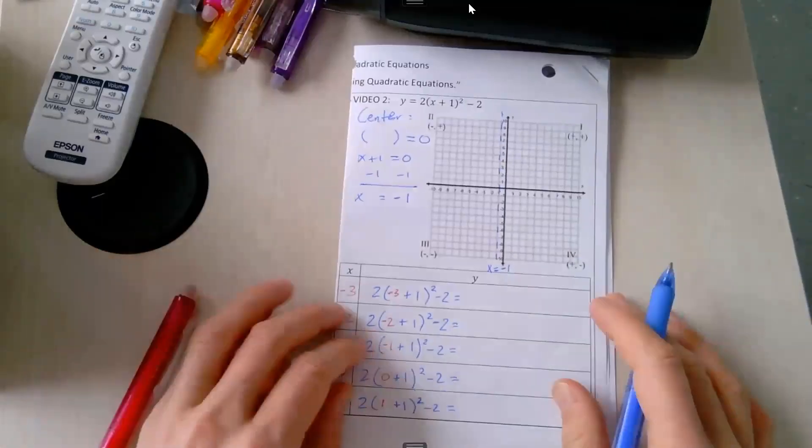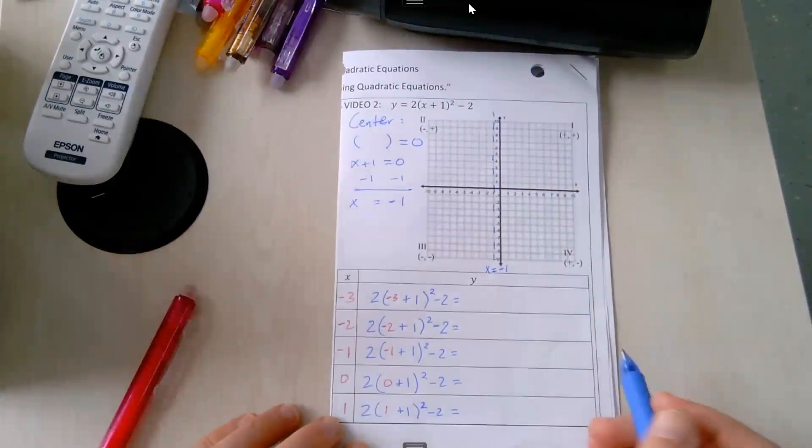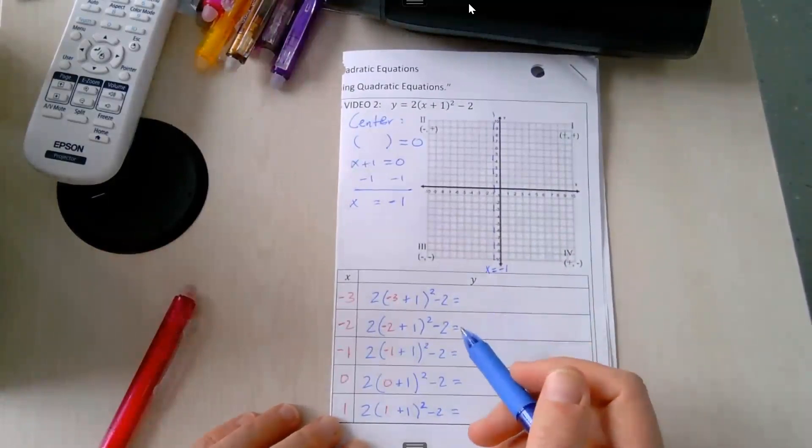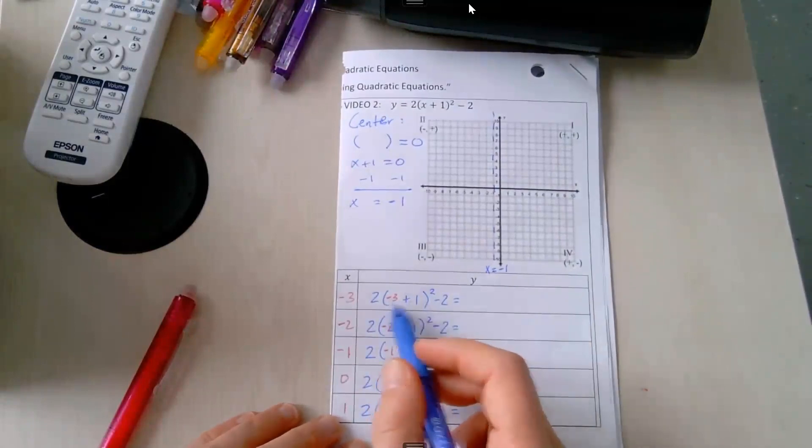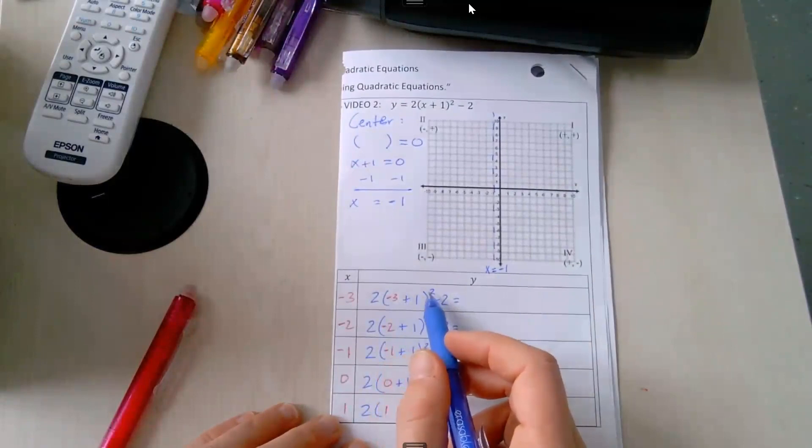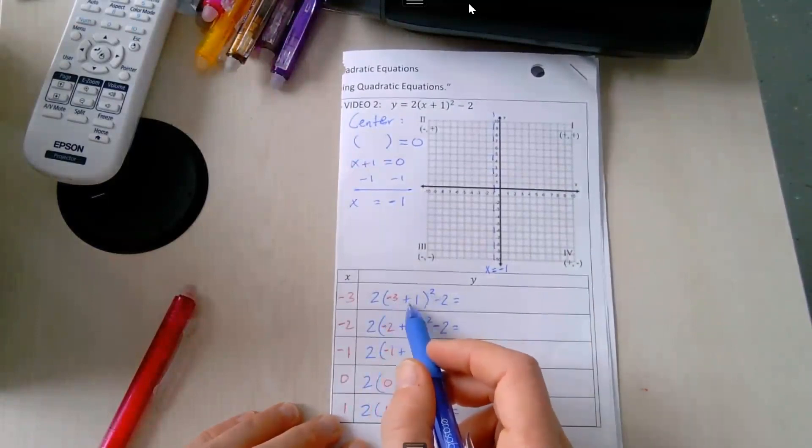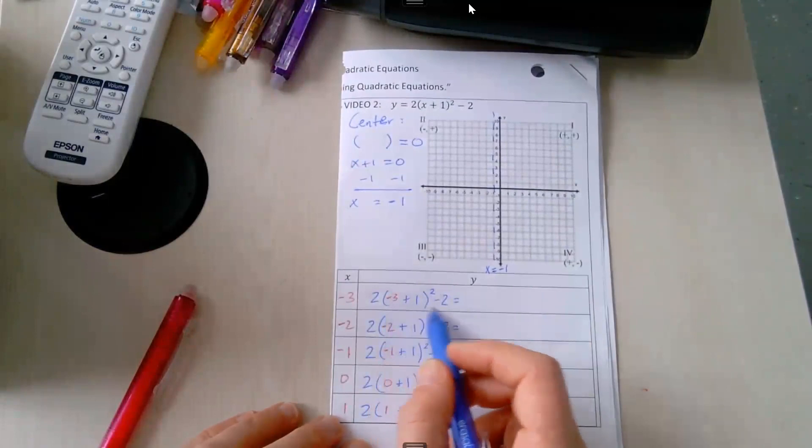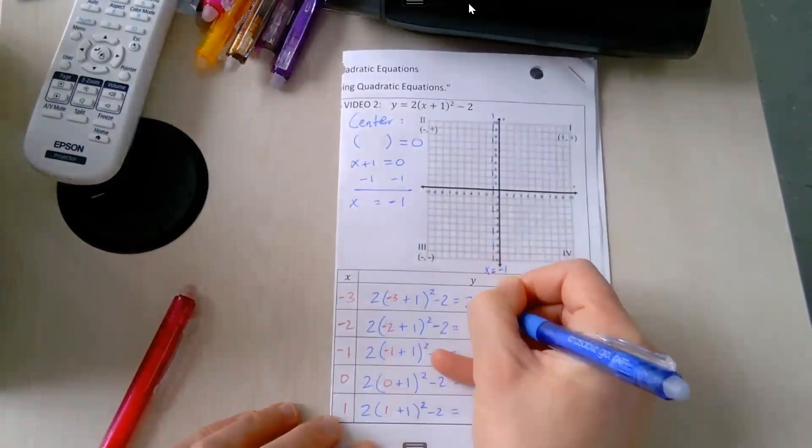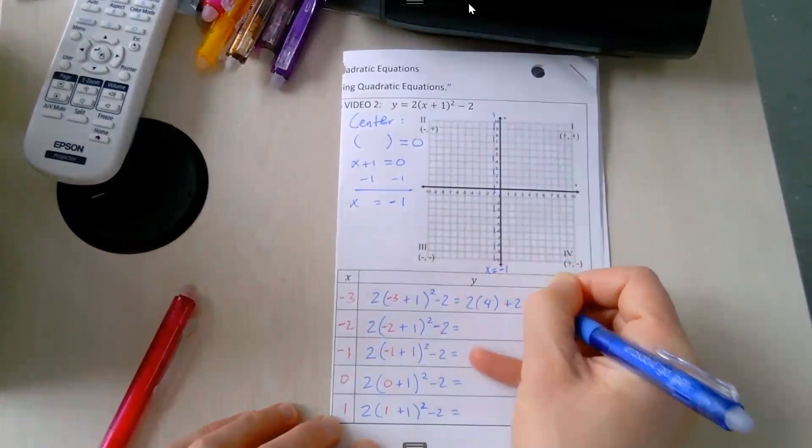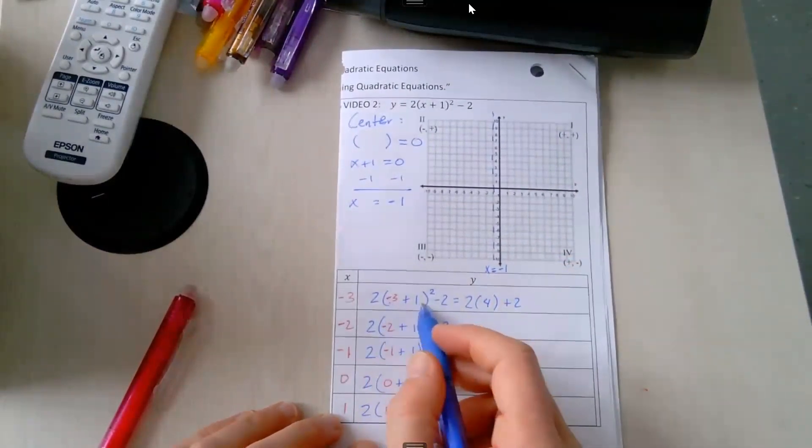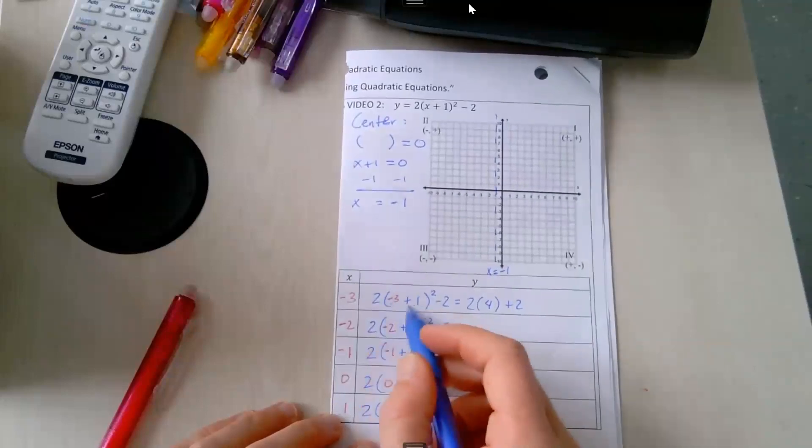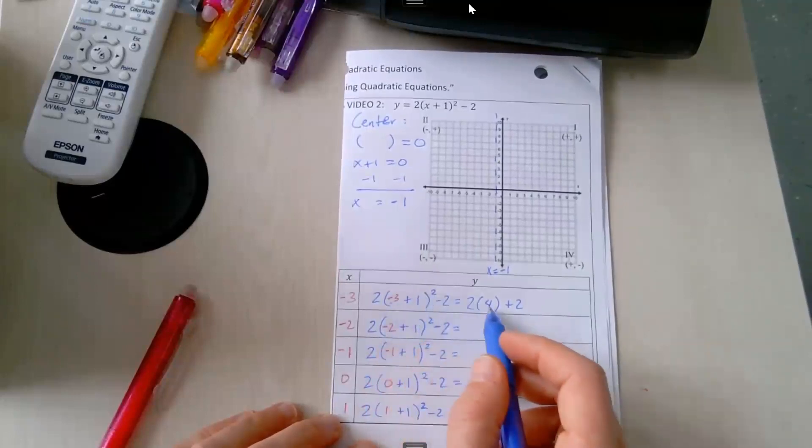All right, so now let's use order of operations. Remember, start with what's in parentheses, then do the exponent. So negative 3 plus 1 is negative 2. Negative 2 raised to the second power is negative 2 times negative 2, which is positive 4. So this is 2 times 4 plus 2. Again, this is because negative 3 plus 1 is negative 2. Then negative 2 raised to the second power is negative 2 times negative 2, which gives us positive 4.